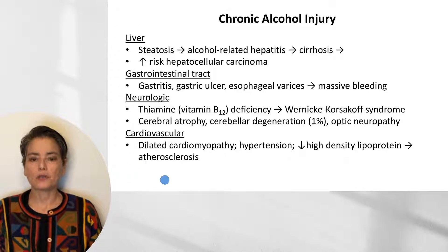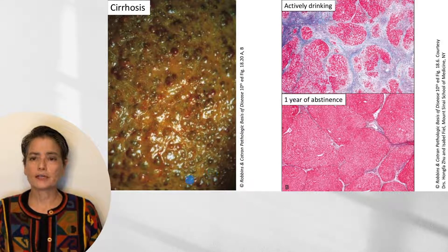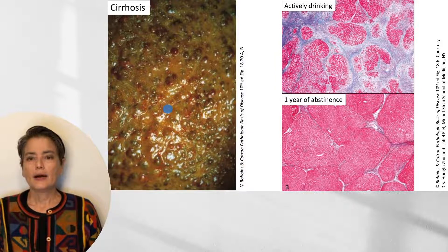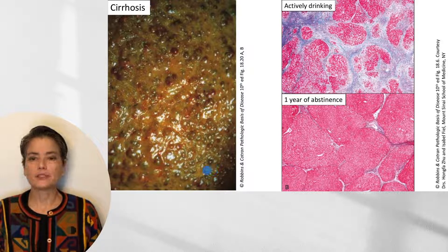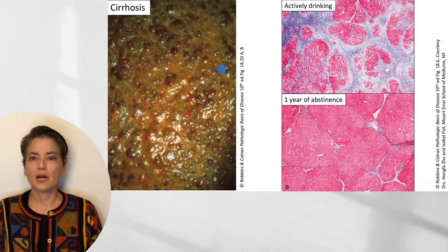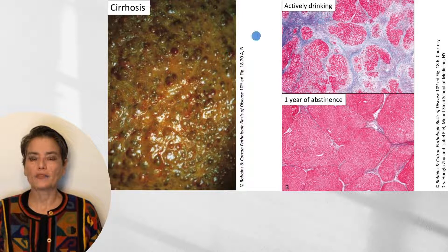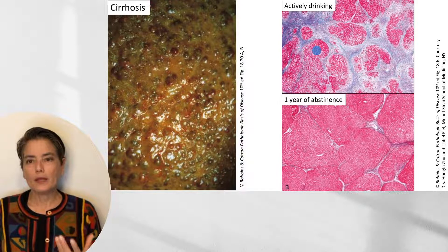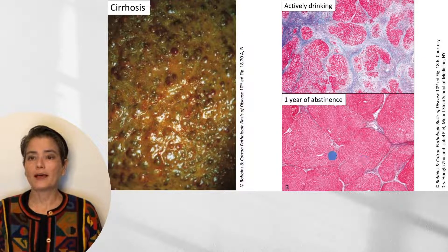This is a cirrhotic liver from an individual who chronically used excess alcohol. The nodules are about three millimeters in diameter, and you can appreciate the slightly greenish color due to backup of bile — cholestasis. Microscopically, nodules of liver are separated by bands of collagen, which stain blue on trichrome stain. Importantly, if an individual becomes abstinent, regression of many these effects is possible — shown here is the same individual's liver after one year of abstinence, with much of the fibrosis lost and liver regenerated.